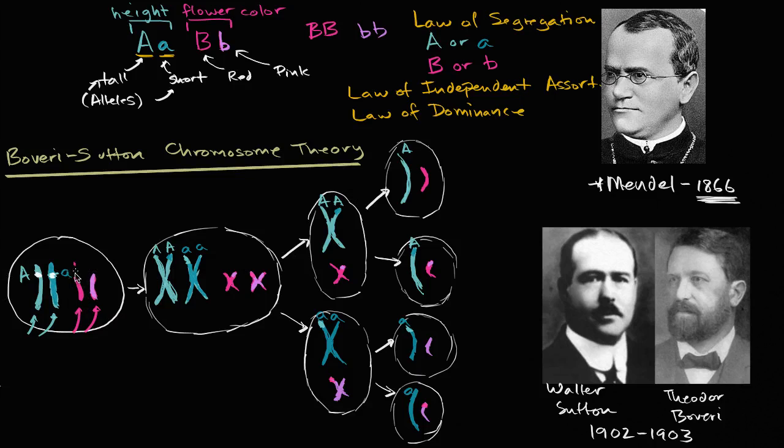So this one right over here might be the capital B, this might be the lower case B. And whether or not this gets a capital B, or a lower case B, is independent of whether it got a capital A, or a lower case A. So it seems like these chromosomes independently assort. And so they came up with this chromosomal theory, that it looks like maybe chromosomes are what contain these heritable factors that Mendel was talking about, because it seems like chromosomes behave very similar to those heritable factors.